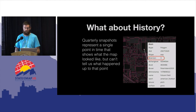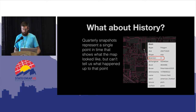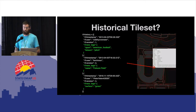One thing the quarterly snapshots cannot tell us, however, is exactly how specific objects evolve over time. We know that Folsom Field has been edited three times, but we do not know how each of those versions changed it. For this we need something new: the historical vector tile set. From the full history planet dump, we create a new tile set that has complete tag history for individual map objects.